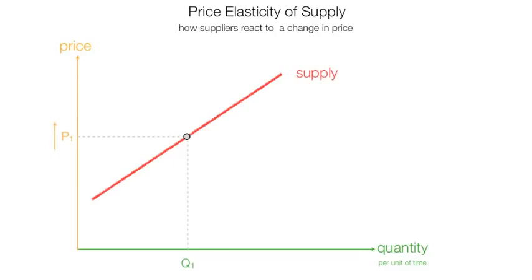If price rises, what we find is prices go up from P1 to P2. Then quantity increases from Q1 to Q2. So quantity supplied increases that amount, the green line I just drew in.